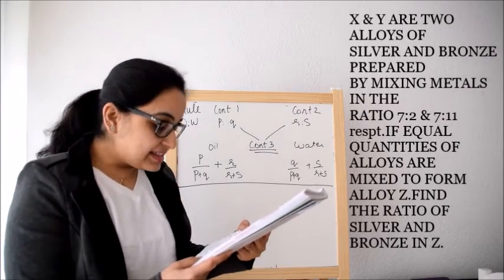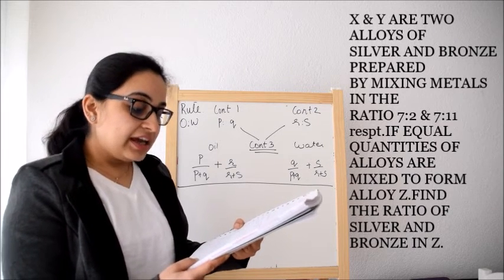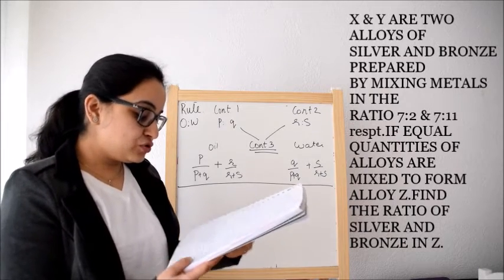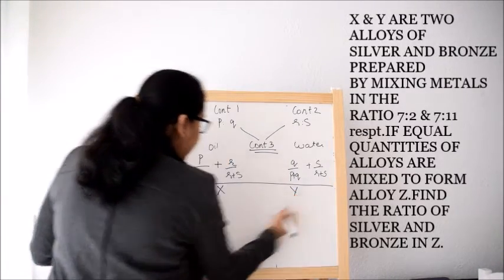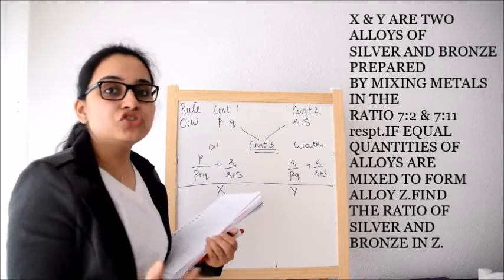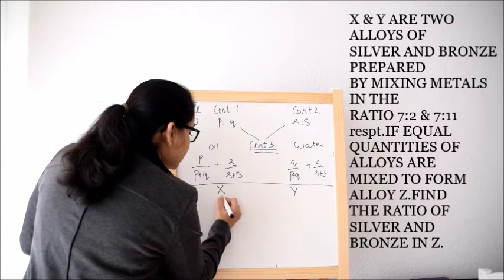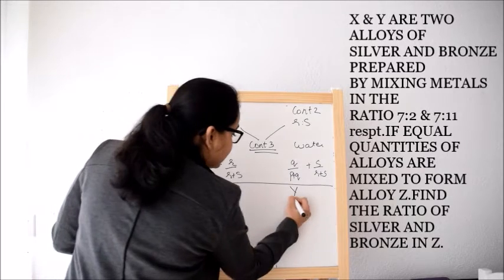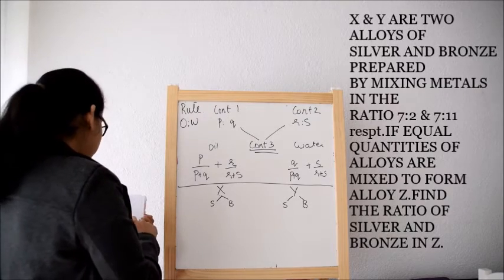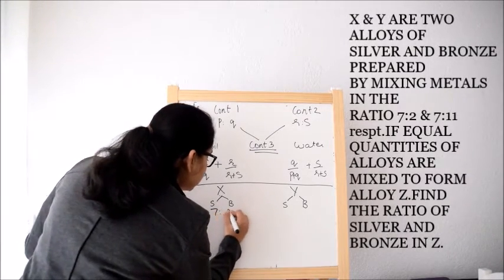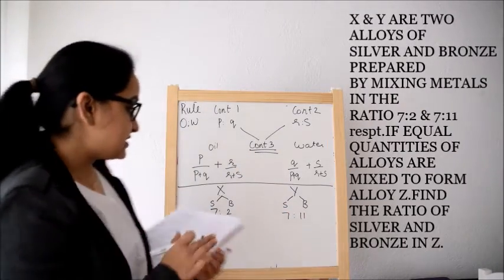Now the question says that X and Y are two alloys of silver and bronze prepared by mixing the metals in ratio 7 is to 2 and 7 is to 11. What does this say? There are two alloys X and Y and alloys are the mixture of metals. So in this X there are two metals that is silver and bronze and in Y also there are two metals silver and bronze. Now in the first X alloy the ratio is 7 is to 2 and in the second alloy the ratio is 7 is to 11. Till here it is clear.